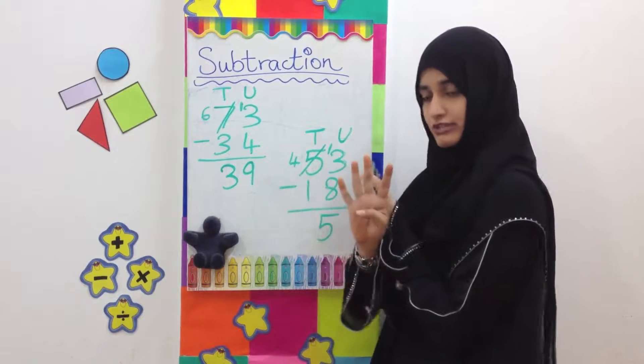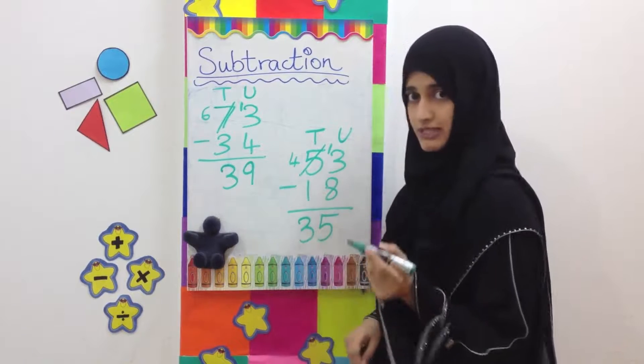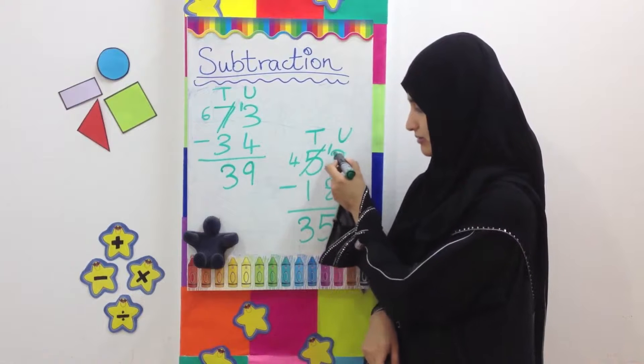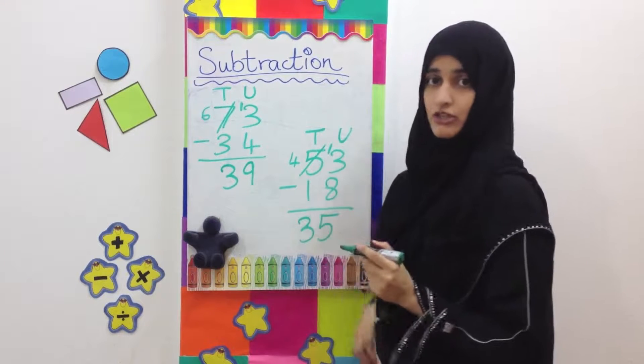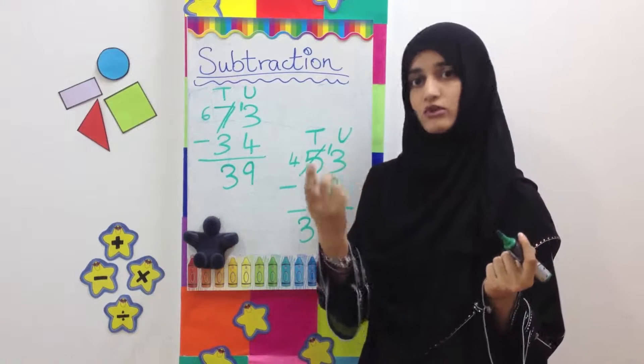In the 10 side we have 4 tens. Take away 1. Answer is 3. Sometimes what happens is that by mistake instead of doing borrowing you will do 8 minus 3. But always think you have 3. You have to take away 8. That's not possible. So you need to borrow.